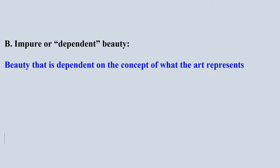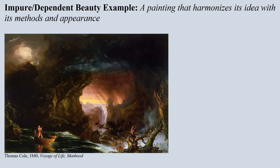So let's talk a little bit about what impure or dependent beauty is. Impure or dependent beauty is beauty that's dependent on the concept of what the art represents in order to find that beauty. This painting by Thomas Cole is part of a series of paintings that are designed to show what human life is like as we move from childhood into adulthood and then old age. And this landscape is impossible to really understand or experience without thinking about it representationally.